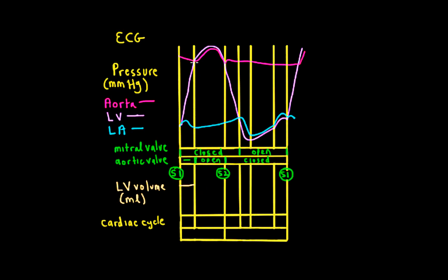Once the ventricle pressure exceeds the aortic pressure and the aortic valve opens, blood can leave the ventricle — the volume goes down because blood is being ejected into the aorta — until the aortic valve closes again. Now I have a situation where both valves are closed, and again I have a period where the volume isn't changing — it's isovolumetric. Then I have a period where the volume's going to go up because I'm filling. It goes up rapidly, then there's a relatively longer period where there's not much of a pressure difference and the volume isn't changing very much, and then the volume bumps up again.